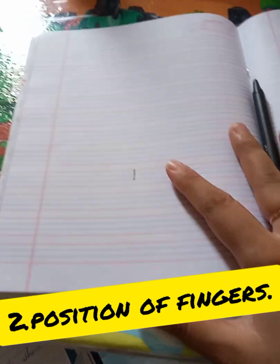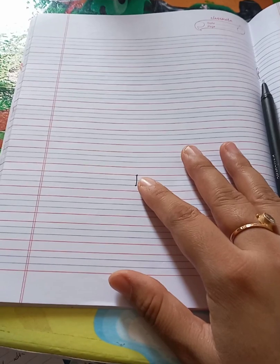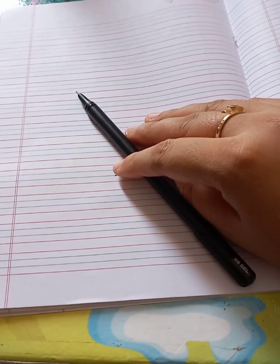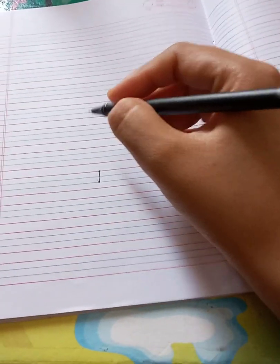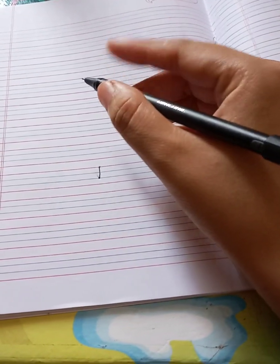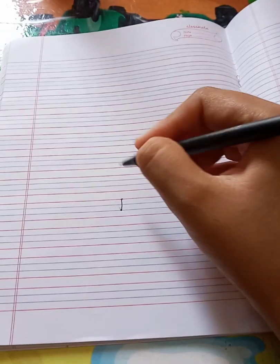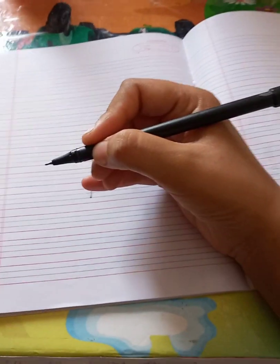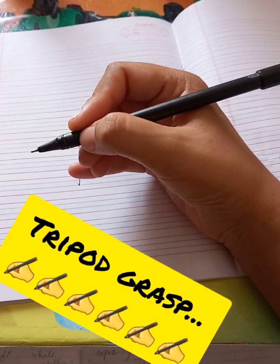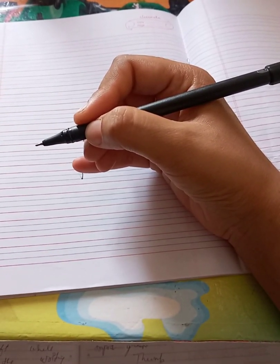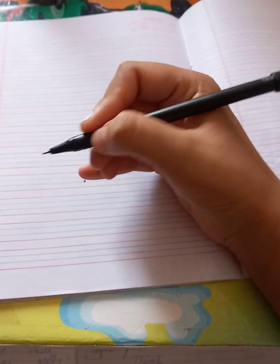Number two is position of your fingers. You just take a pencil and normally you have a thumb and index finger which forms this kind of movement while writing. This is popularly known as tripod grasp.